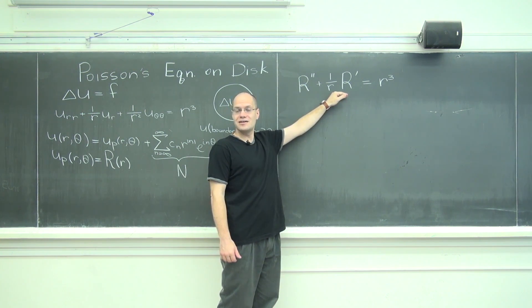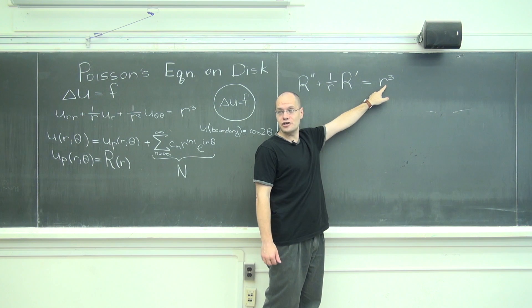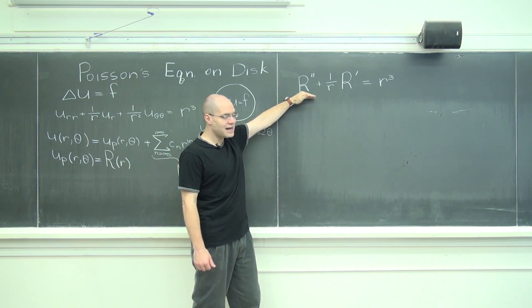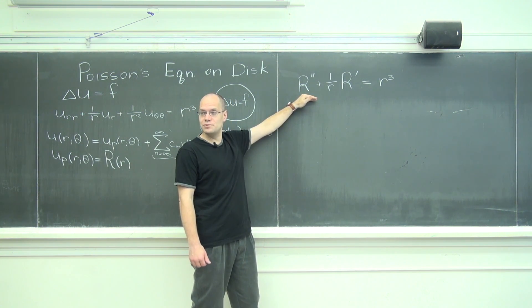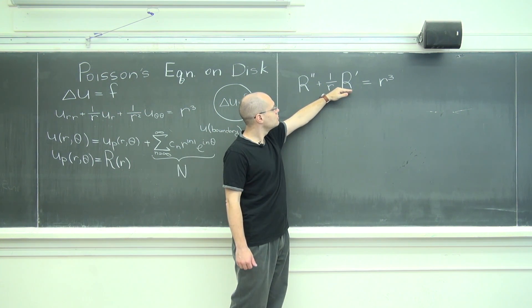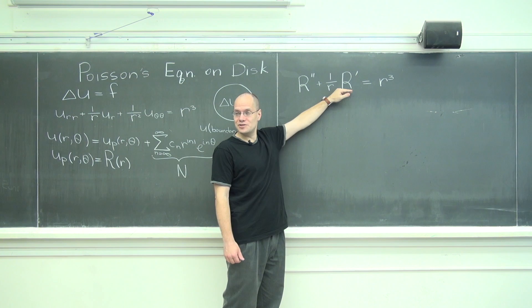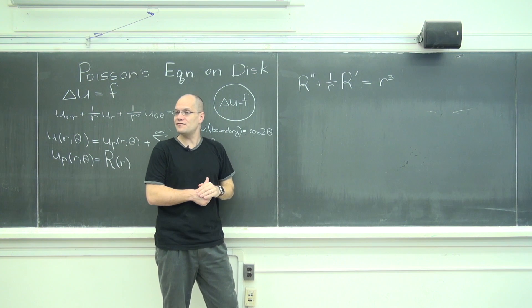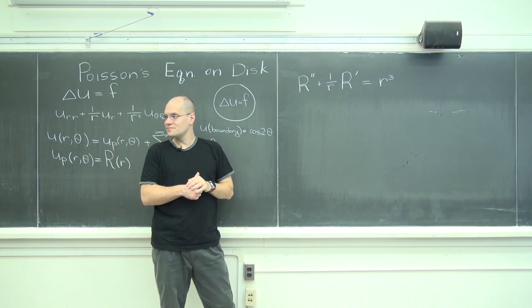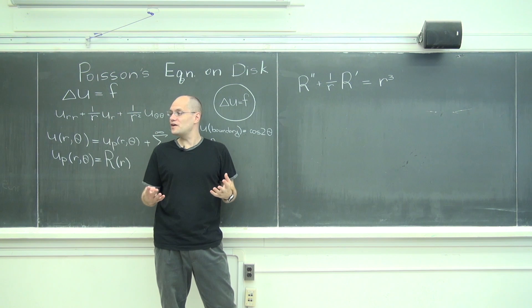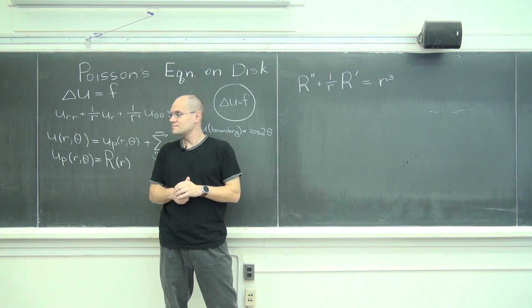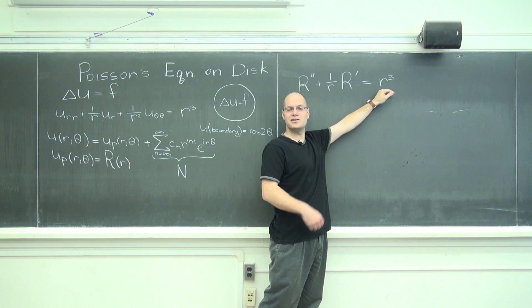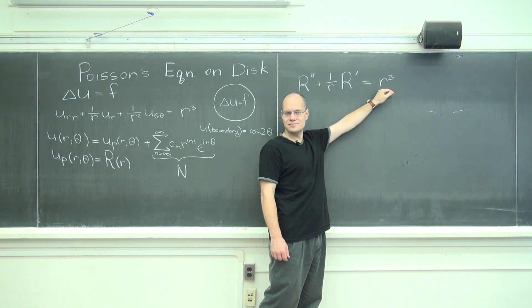So we just have to find one, and in this case you can kind of see that a power will work. Do you see that? Because if we try, well let's see, we got to drop down to R cubed. So if we try R to the fifth, then this will be 5 times 4, 20 R cubed, plus 5 R cubed. Do you see that? The derivative will knock down one power and then one over R will knock down another, so it'll be 25 R cubed. So the solution we're looking for is one twenty-fifth R to the fifth. Do you see how I did that? Because plugging in R to the fifth gave us 25 times what we want, so we should take one twenty-fifth of the original guess.